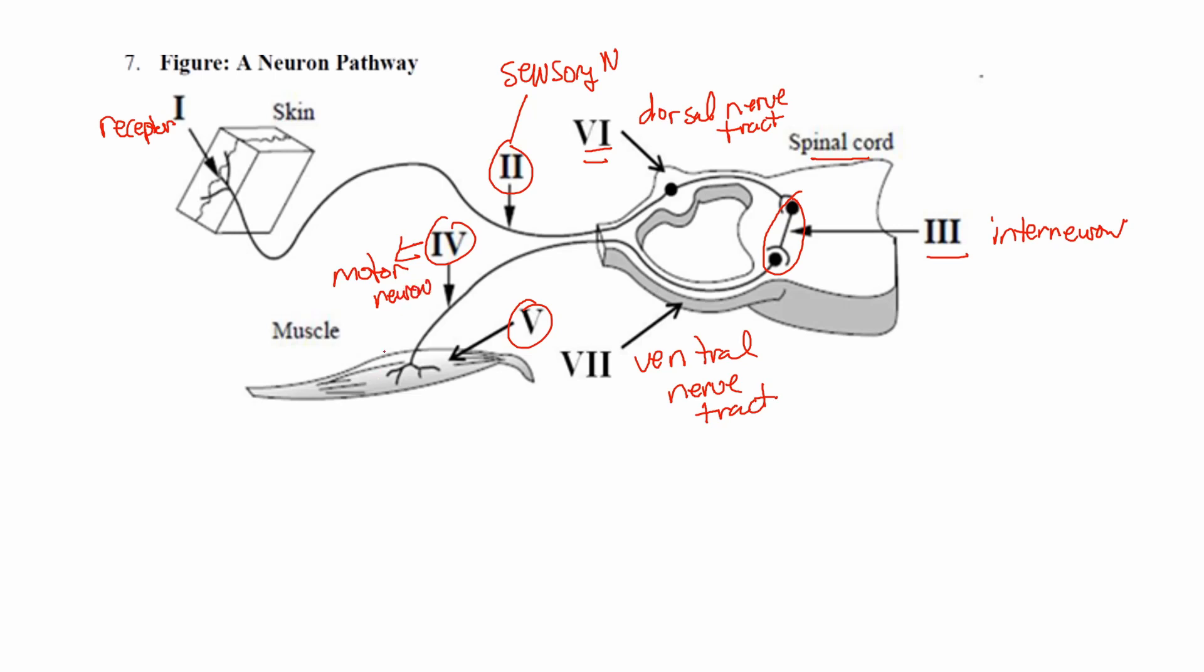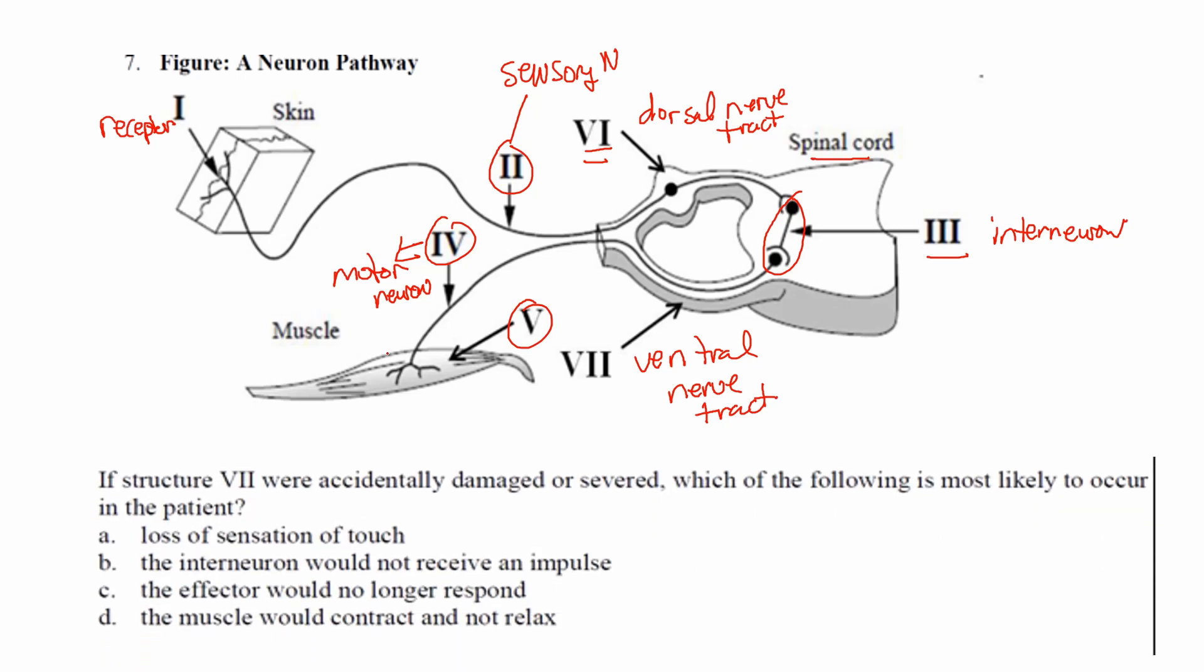So again, strategy: when you see a diagram like that, fill it in really quickly. It doesn't take you that long, and that's going to unlock some of the information coming up here. So if we take a look, here is the actual question. It's saying if structure V2, I think that's seven in Roman numerals, is accidentally damaged or severed. So what they're saying is, this is severed right here. Which of the following is most likely to occur?